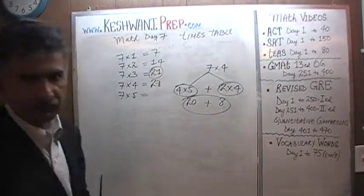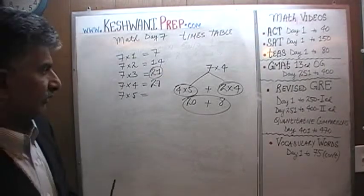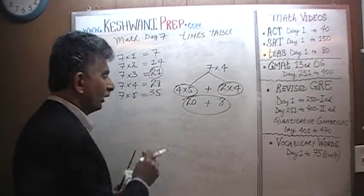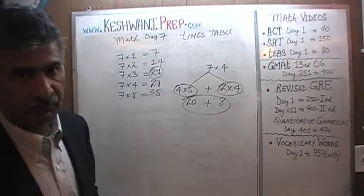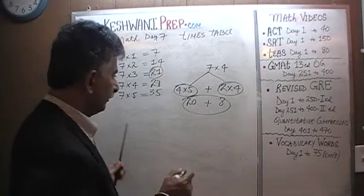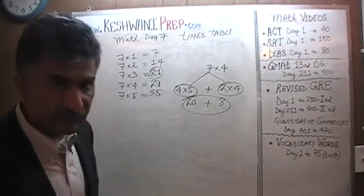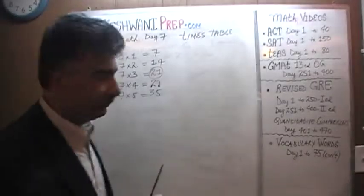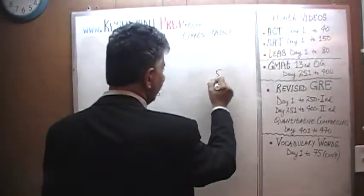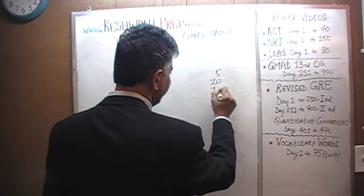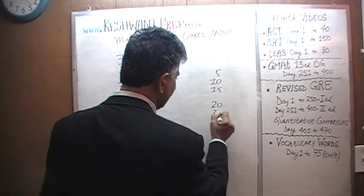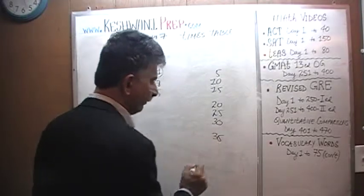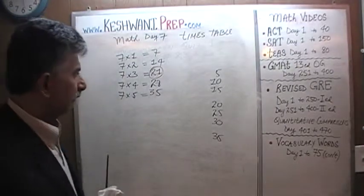How about 7 fives? 7 fives is very simple — 7 fives are 35. Counting by 5 is very simple. We just count by 5s until we get 7 of them. We know our table of 5. 5, 10, 15, 20, 25, 30 — that's 6 so far — and here's the 7th: 7 fives is 35.